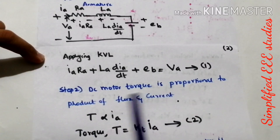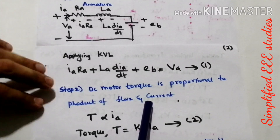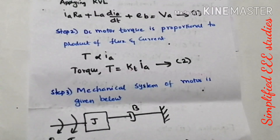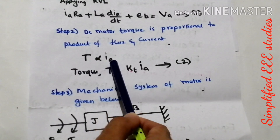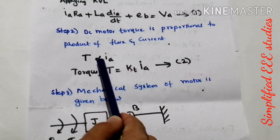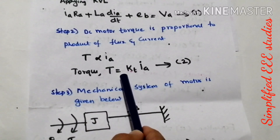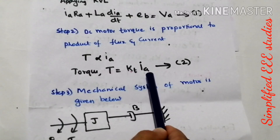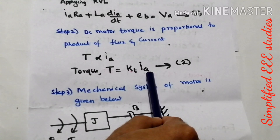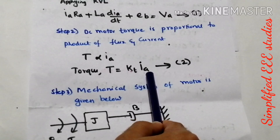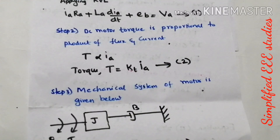DC motor torque is directly proportional to the product of flux into current. That means torque is directly proportional to Ia. Removing the proportionality constant, torque is given by T = Kt·Ia, where Kt is the torque constant in newton meter per ampere. Please call this equation number 3.